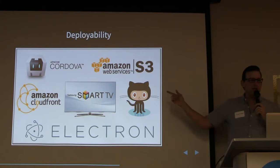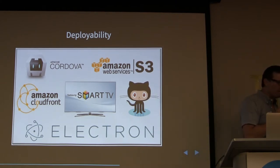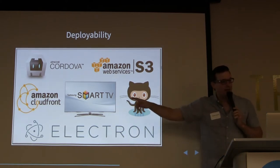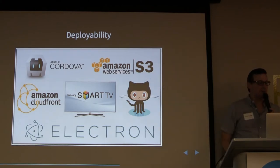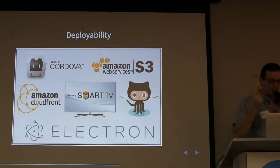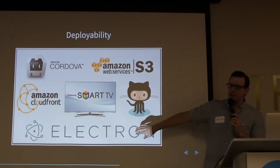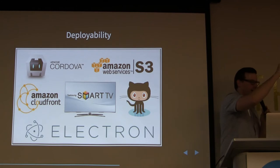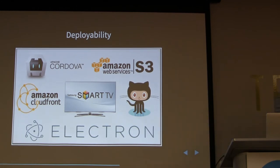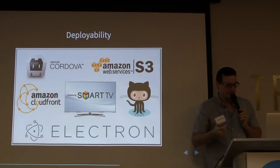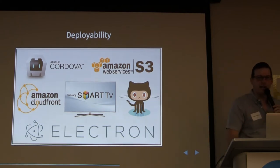Another thing people don't think about with serverless is deployability. Whenever your app is handcuffed to the server, you cannot compile it as a Cordova mobile application. You can't put it on Amazon S3 with CloudFront. Smart TVs now support apps that you can build and put on them. And there's Electron — I just saw Mongo Compass, and I would bet money that was built in Electron. You can't do any of that if your apps are handcuffed to the server.